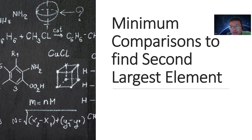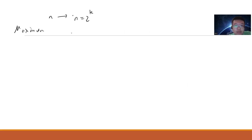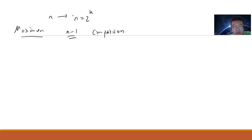The problem is: minimum comparisons to find the second largest element. The easiest part is finding a maximum. So if you have n numbers — for simplicity let's say n is 2 to the k — in order to find the maximum, the simple answer is n minus 1 comparisons, because you at least need to compare any two of them.